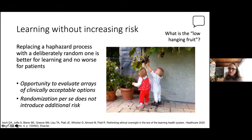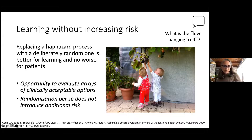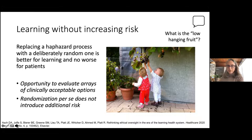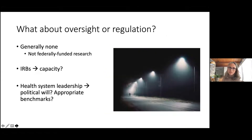This is a fairly low-hanging fruit in LHS embedded research: taking two clinically acceptable options, evaluating them systematically, implementing a change, and monitoring it. Ideally, there's a whole slew of questions that can essentially replace what's now a haphazard process with one that is deliberately randomized and that we can learn from. We're learning from the system and providing a treatment that is no worse — randomization in itself is not an introduction of risk.